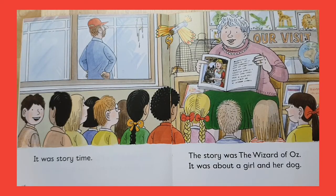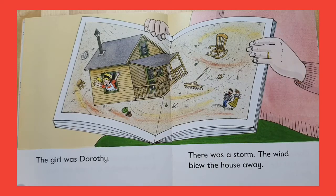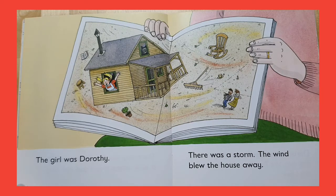It was story time. The story was The Wizard of Oz. It was about a girl and her dog. The girl was Dorothy. There was a storm. The wind blew the house away.